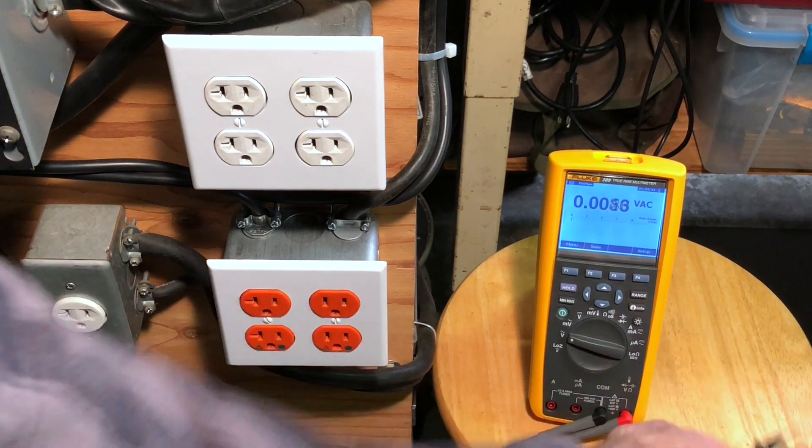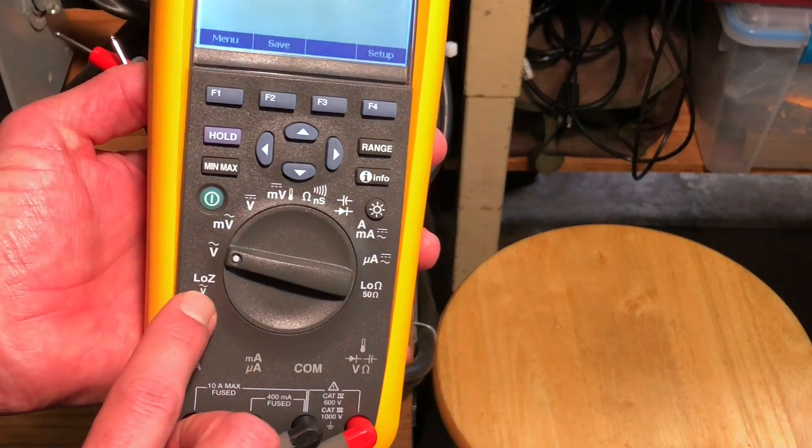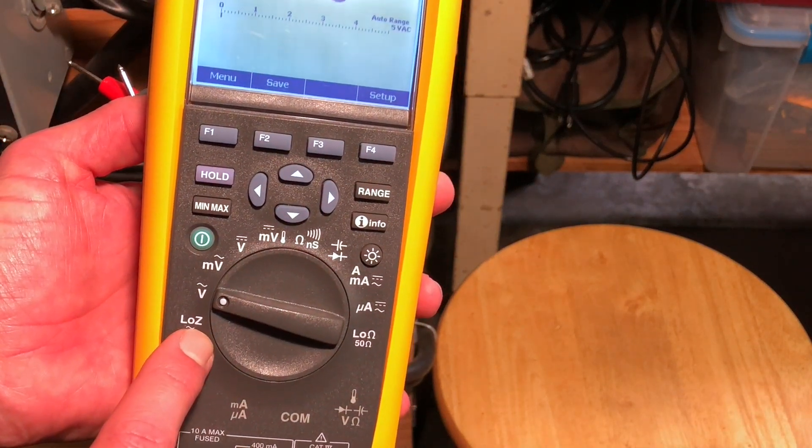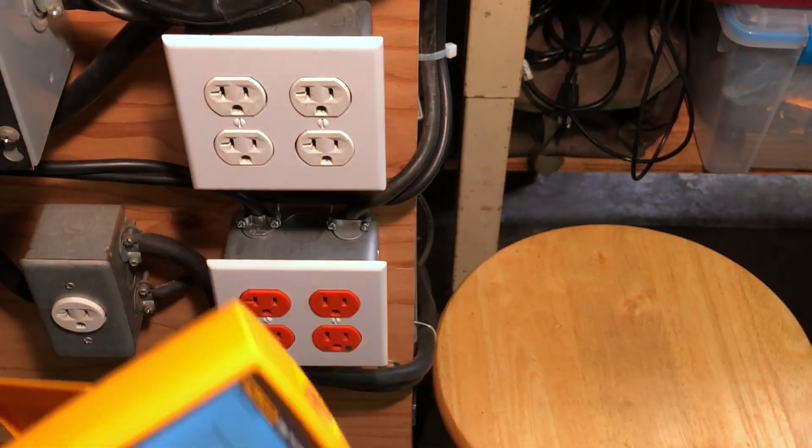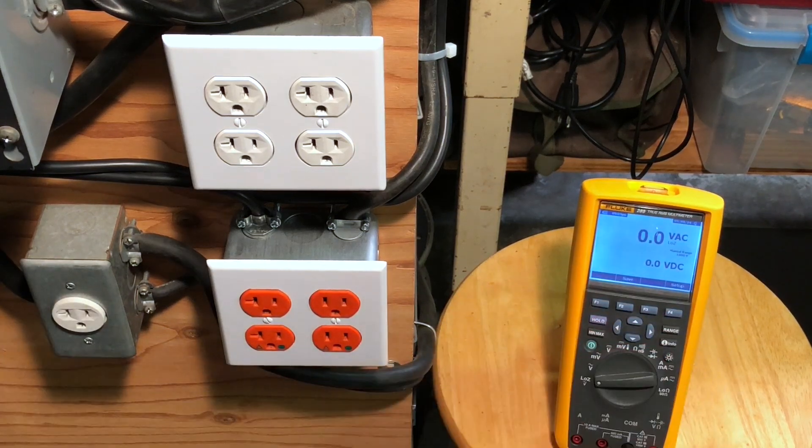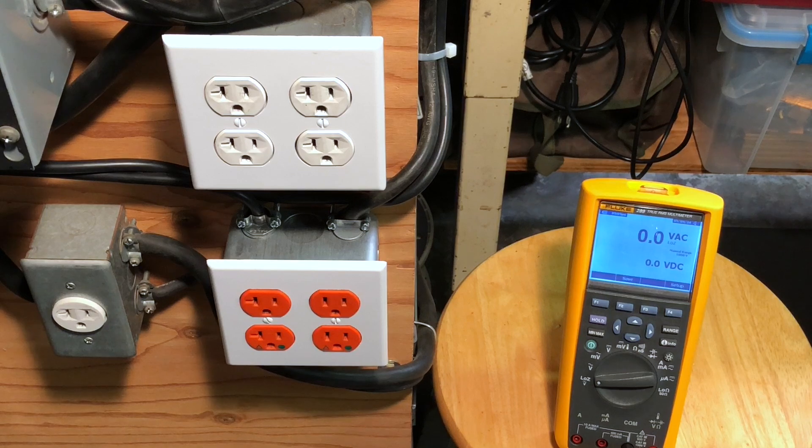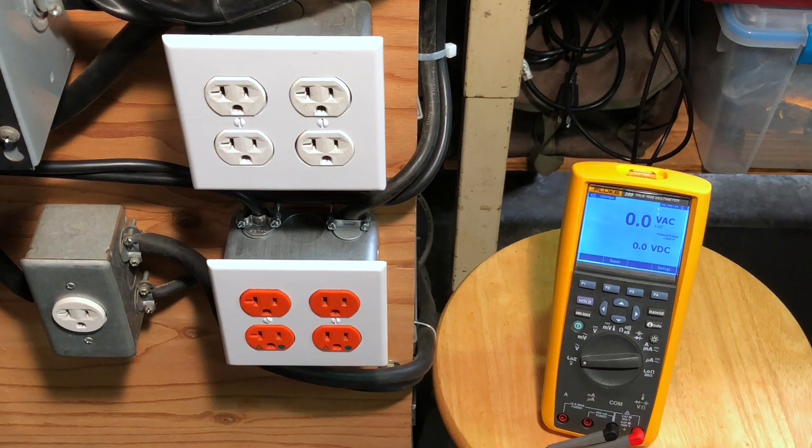Let's look at what a low impedance is. If I grab my Fluke 289 and show you on the front panel, see it says low Z right there. Z is the symbol for impedance, and that is the low impedance mode. It takes the impedance of this digital multimeter that was up in the 10 mega ohm range or possibly higher than that and drops it way down into just the thousands of ohms. Conveniently, it measures volts AC and volts DC at the same time, a very nice feature.